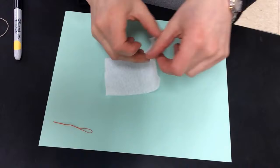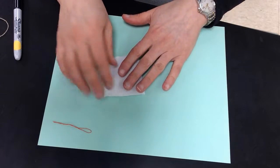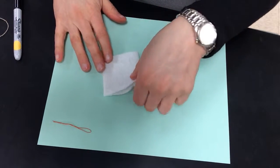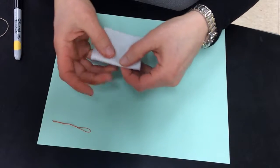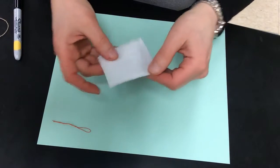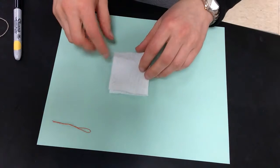What you're going to do is fold the rectangle over so that it's folded like this. So you're going to have one side that has a fold, and then you're going to have three open sides.